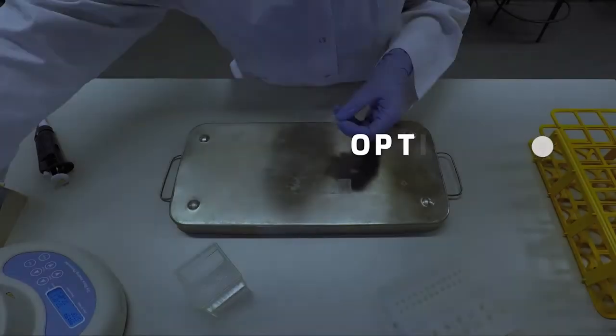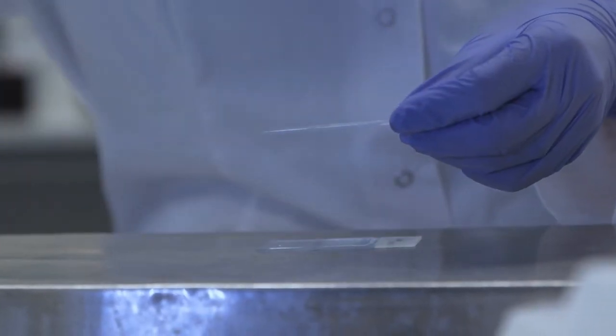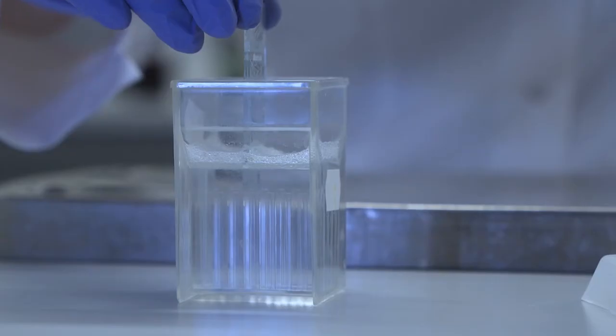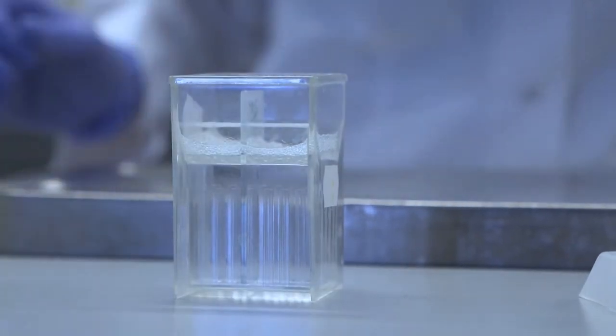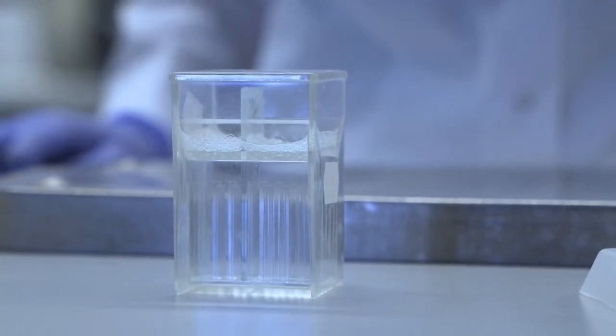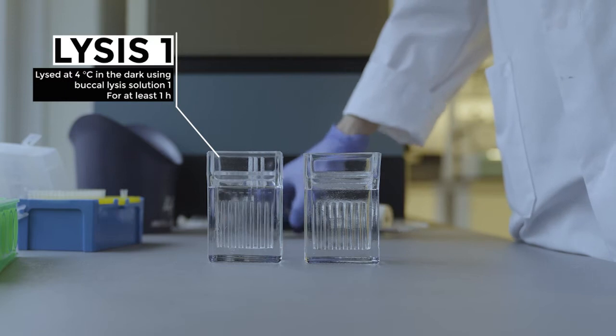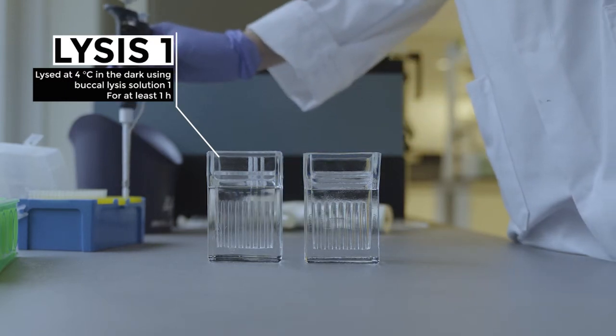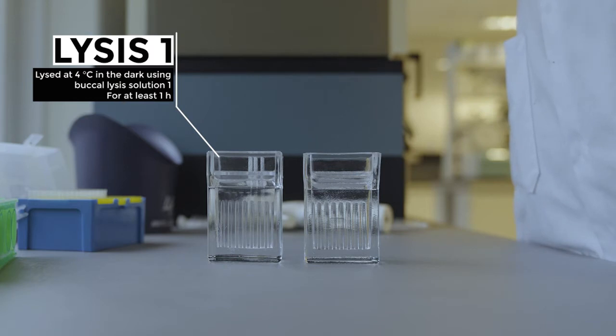Carefully remove the coverslips and perform lysis. Human buccal cells require two lysis steps. First lysis at 4 degrees Celsius in a dark jar. The slides should be immersed in alkaline buccal lysis solution 1 for at least one hour.